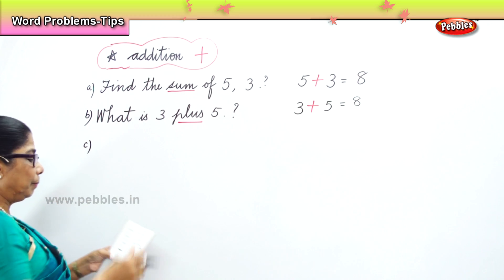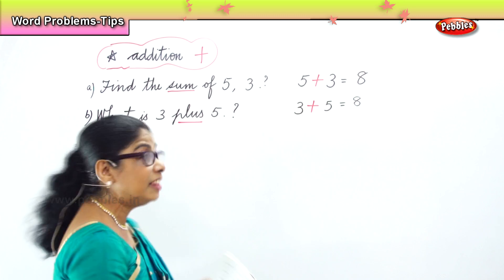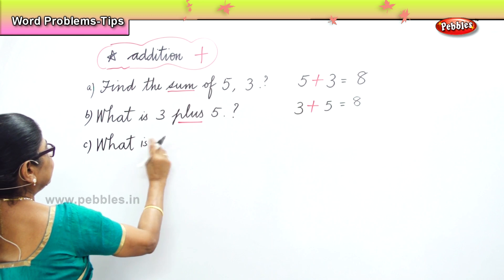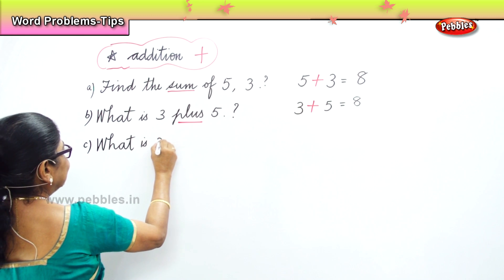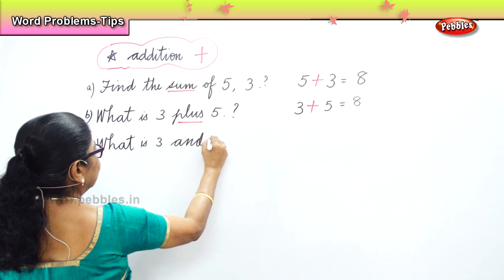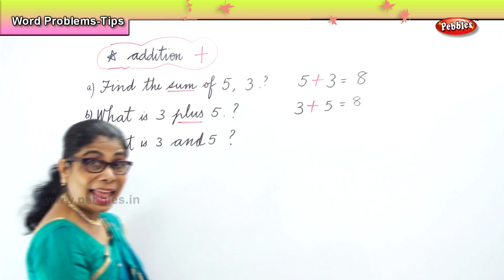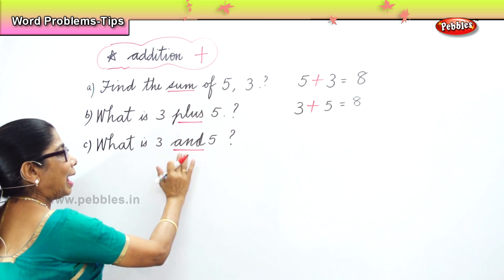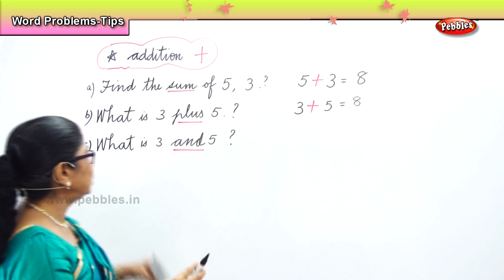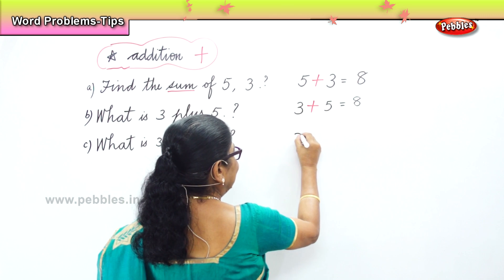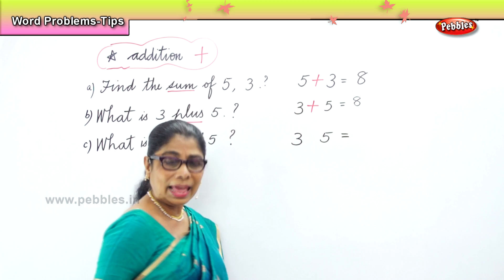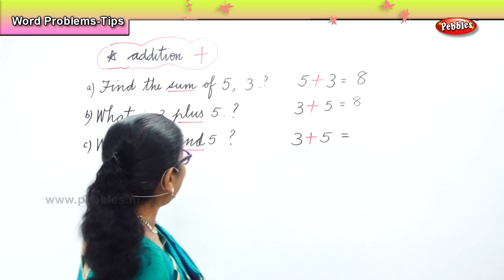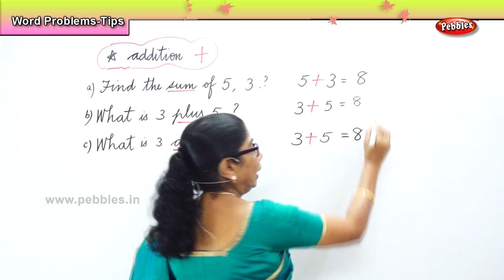Next tiny problem. What is three and five? When you say 'and' — and means plus. Sum means plus, plus means plus, and means plus. We must remember that. So, three and five together make eight.